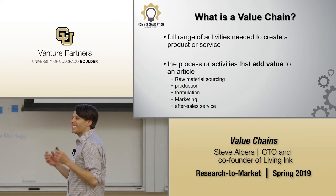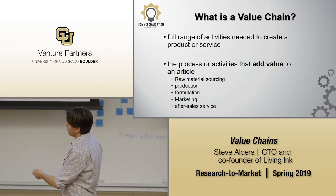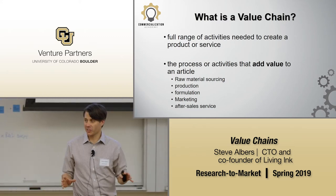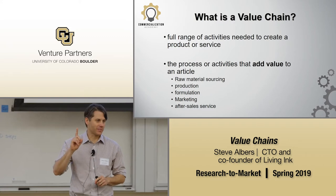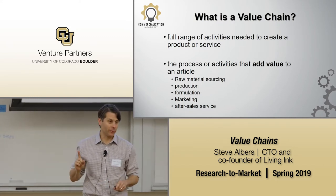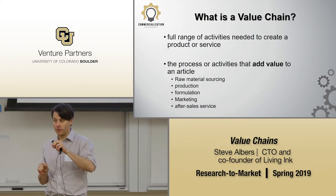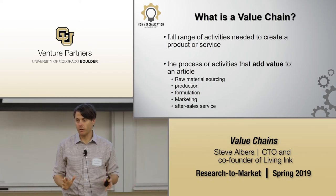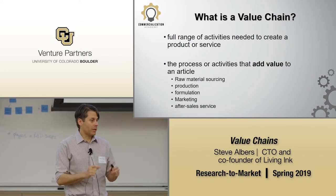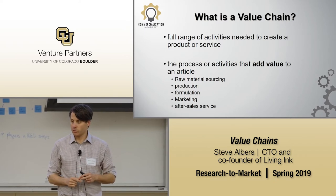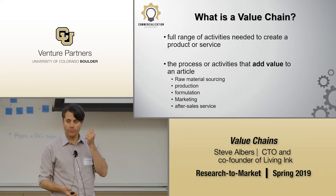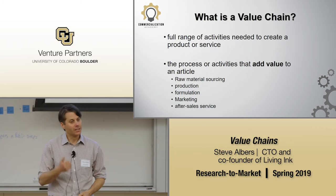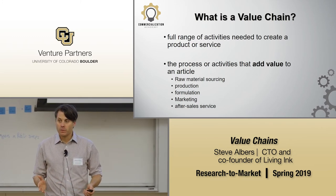Starting to understand what chunks of the value chain you want to bite off is really critical — production, formulating, marketing, after-sales service. One thing we learned from our Kickstarter: dealing with postal services worldwide is a giant pain. Moving a product from U.S. jurisdiction to Canada, Finland, Czech Republic, China — we made the mistake of sending it all over the world. When a product gets crushed on the way to Australia, that person calls Living Ink expecting after-sales service. Scott was handling that — it took time.